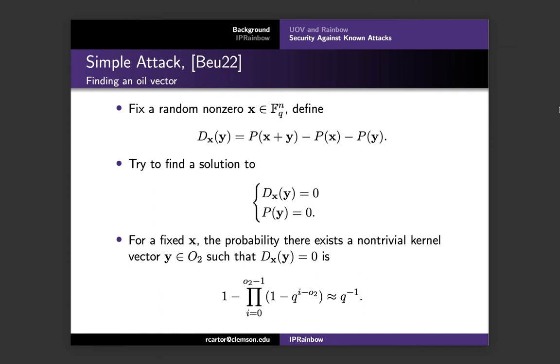Once you're able to find a vector y that is in O2, you can complete the attack, which Ward will be talking about in his presentation. This attack breaks the rainbow one parameters quite efficiently, and this technique can also be used in conjunction with the rectangular min rank, and that is what is really used, that combined technique for higher security parameters such as the level three and level five parameters. Because of this, we were interested in seeing if there was a way to repair rainbow through modifiers.